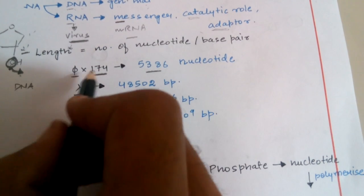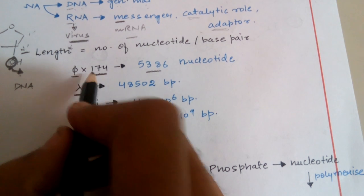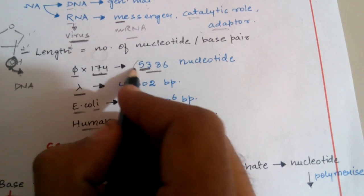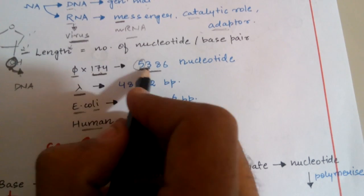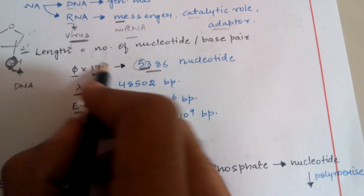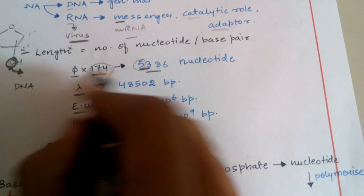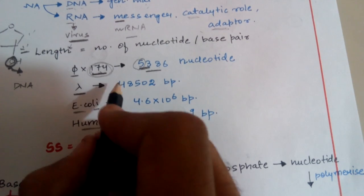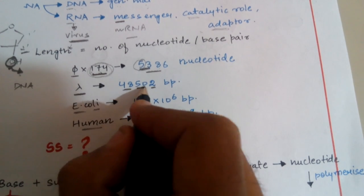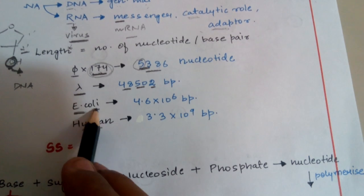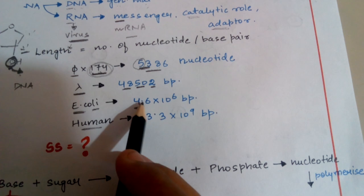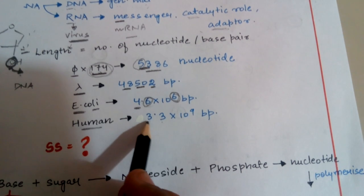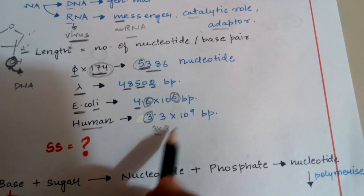For phi 174: the numbers are in the name itself — 5386 nucleotides (using 1+4=5, 4-1=3, 7+1=8, 7-1=6). For lambda phage: 48,502 base pairs (50-2=48, 48+2=50). For E. coli: you only need to memorize 4 — it is 4.6 × 10⁶ base pairs. For human beings: 3.3 × 10⁹ base pairs — just remember 3.3, as 3×3 gives the relationship.